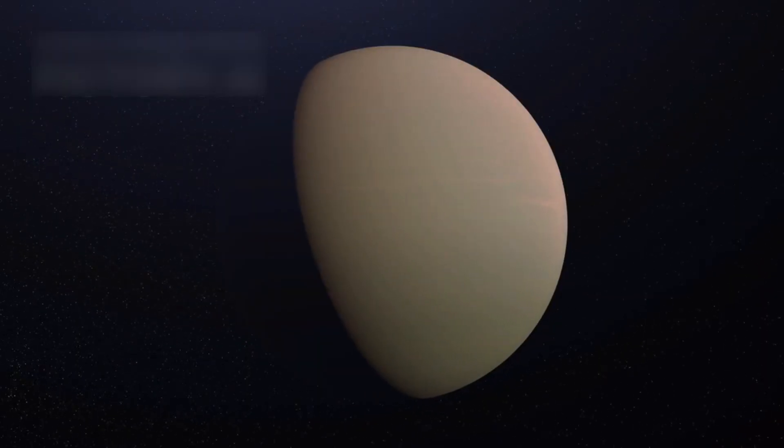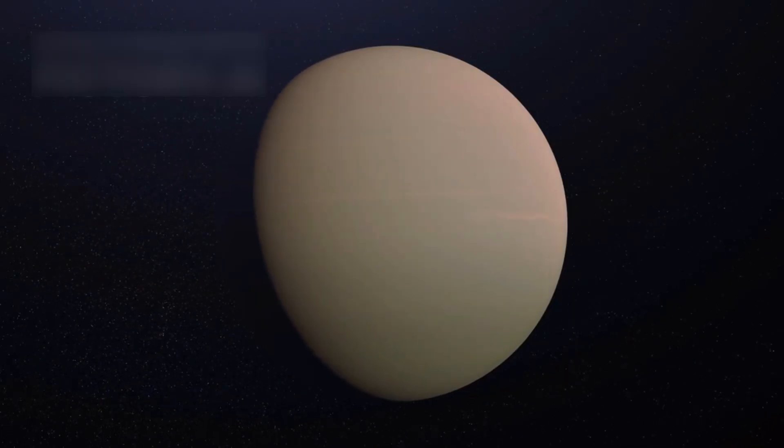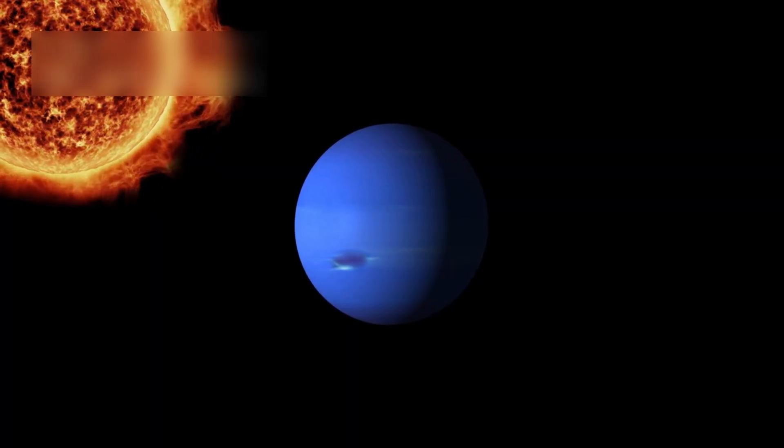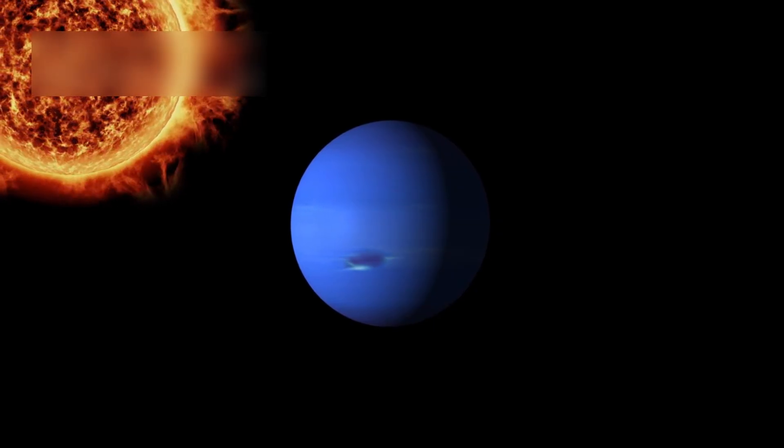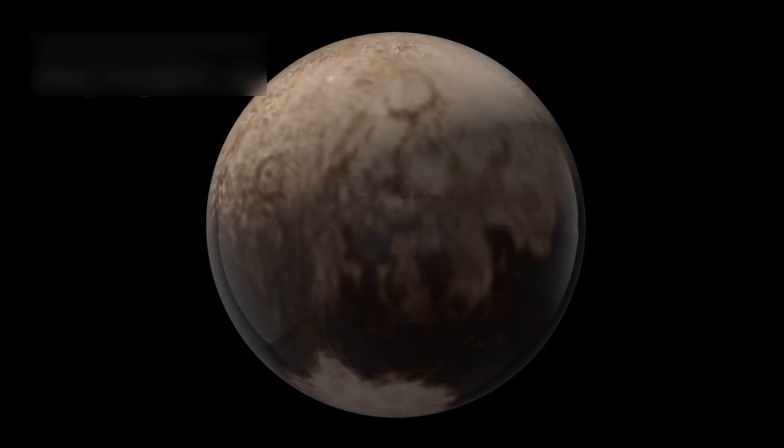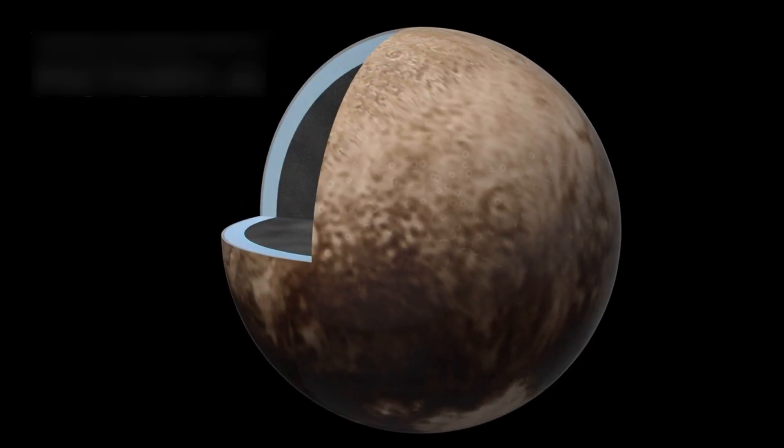Another key detail is Pluto's vertical motion. Even when it crosses Neptune's orbit, it does so from above or below, thanks to its orbital tilt. This extra spacing in the vertical direction adds another layer of protection.